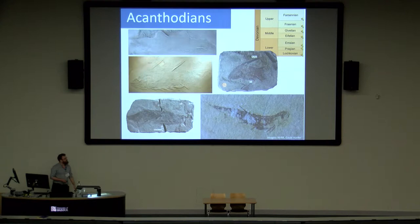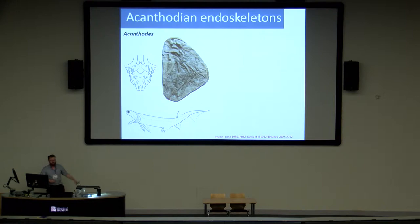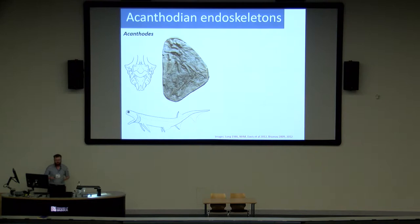Here are some pictures of acanthodians — all convincingly fish-shaped. The problem with them is that they very rarely preserve any endoskeleton, any internal structures of the pharynx and head, which makes piecing together how gills evolved quite difficult. We do know some stuff about acanthodian endoskeleton from Acanthodes, which is where we get almost all our information. It has a narrow basioccipital, which is like what we see in osteichthyans. It's known from moulds which are difficult to interpret, and it's also very late-occurring, from the Permian, so it may not be a good model for Devonian acanthodians.